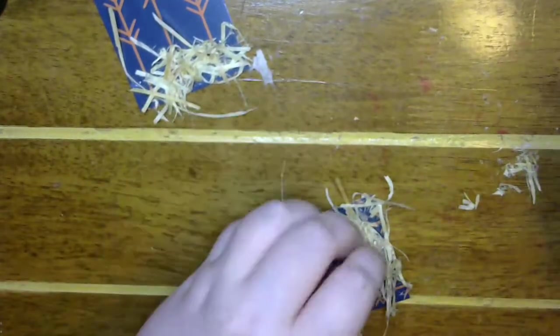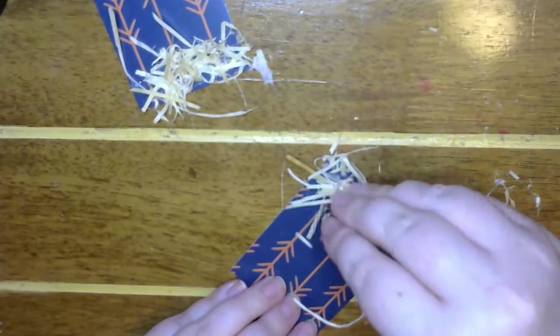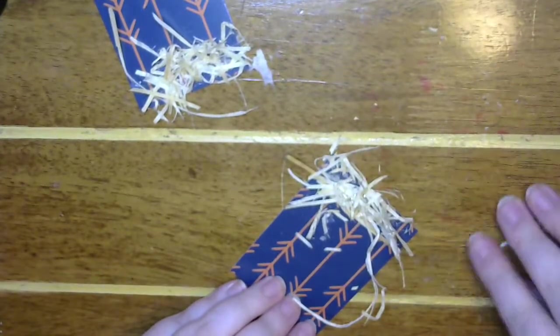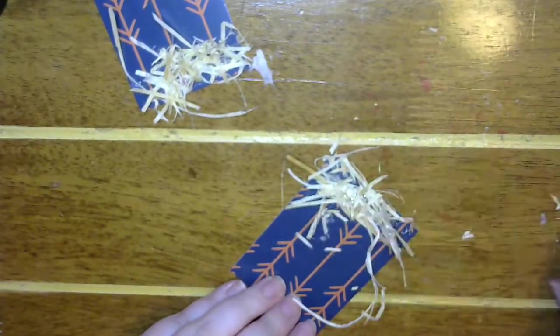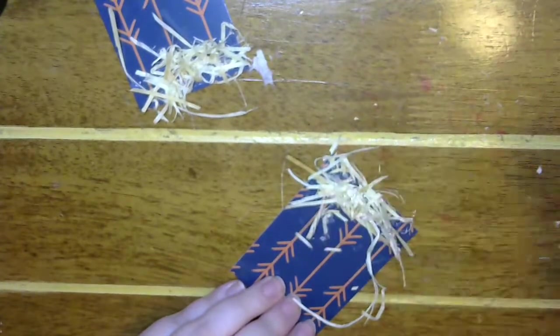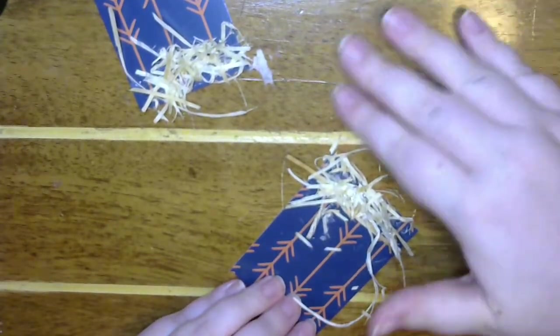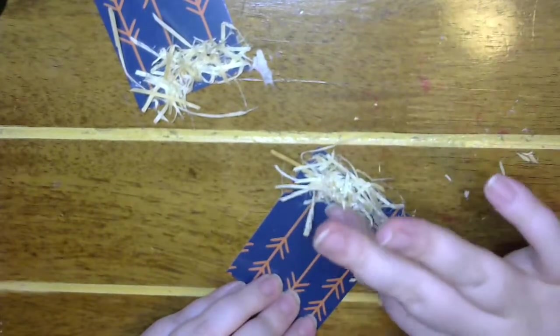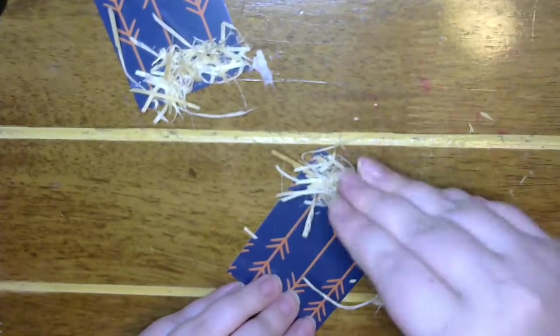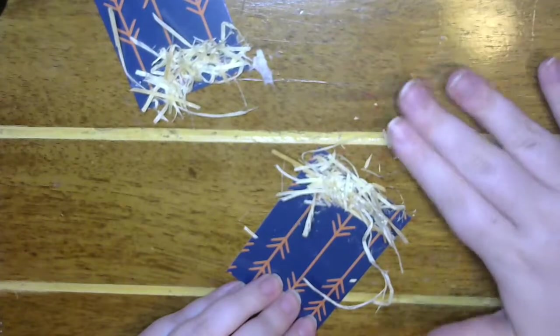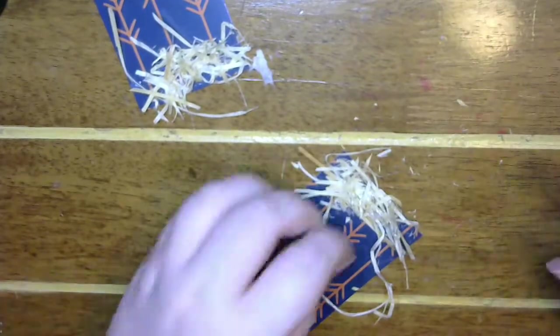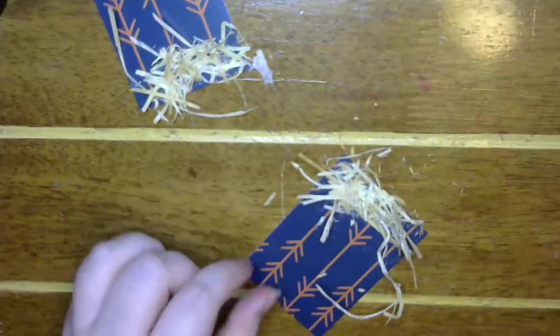I was like what the heck is that and it was going on for like a week and I was like they have to be done by now. And finally I found out that there was a bird on the little light or porch light, essentially it's porch light even though we don't have a porch, and it was trying to make a nest on top of our light.